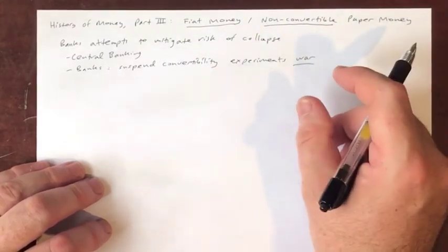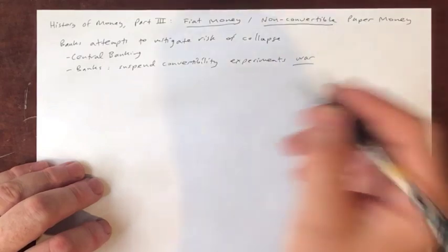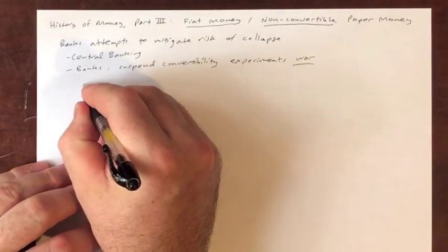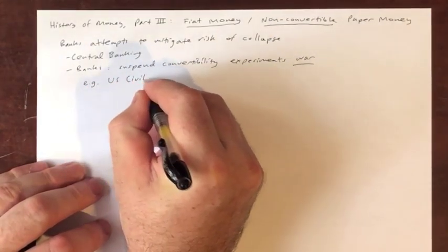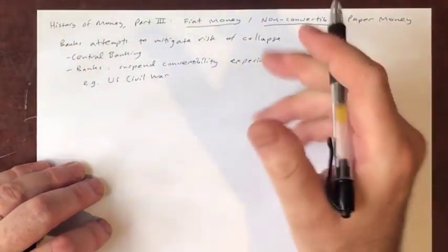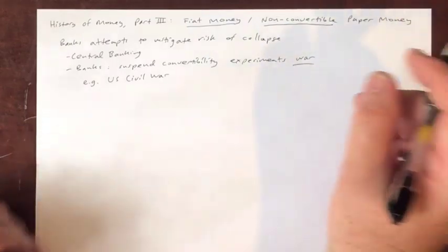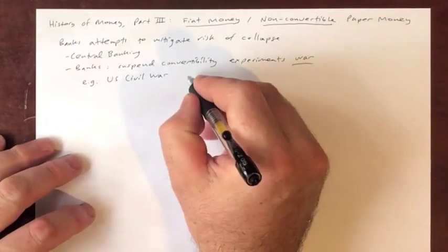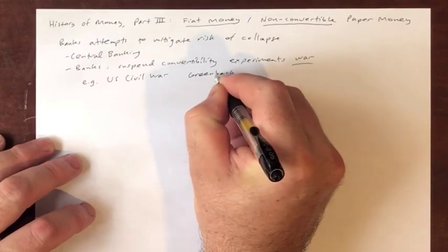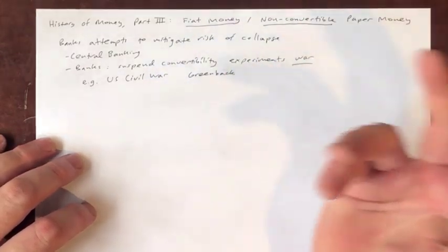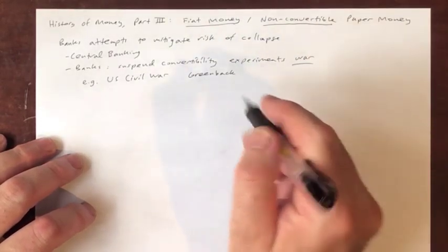For example, the United States during the Civil War. The Civil War was a lot more expensive conflict than anyone thought it would be. The United States introduced a new currency in order to pay these war expenses, and that currency was called the greenback.